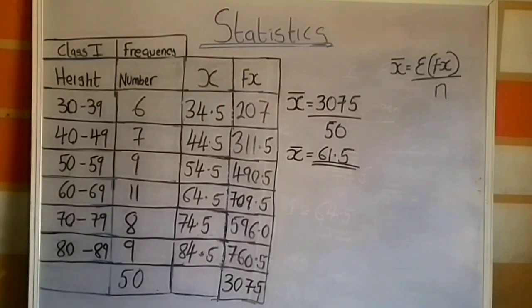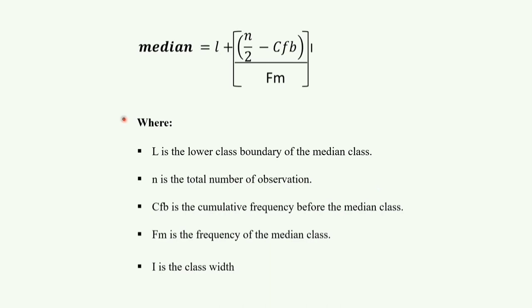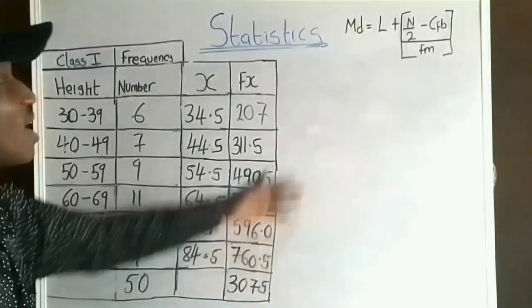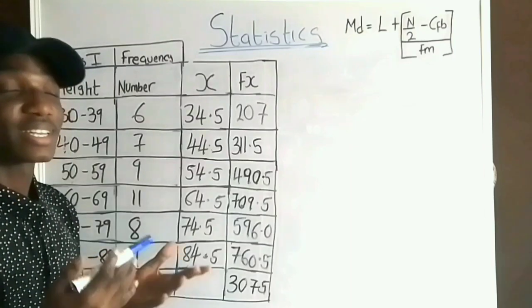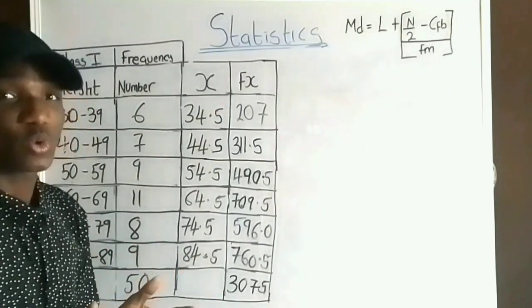The next thing to calculate is the median. The formula is: Median = L + [(N/2 − CFB) / FM] × h, where L is the lower class boundary of the median class, N is the total number of observations, CFB is the cumulative frequency before the median class, FM is the frequency of the median class, and h is the class width.